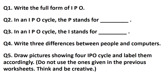Question number 4: Write 3 differences between people and computers. People can do one thing at a time, but computers can do many things at a time. People can think and plan, but computers cannot. People get tired, but computers never get tired. Kids can also write: people have feelings but computers have no feelings, or people can make mistakes but computers do not make mistakes like that.